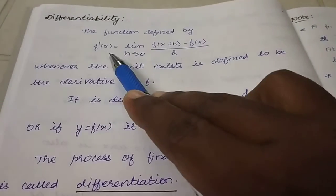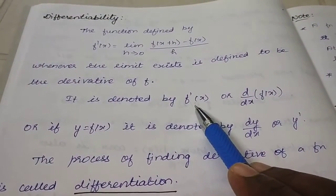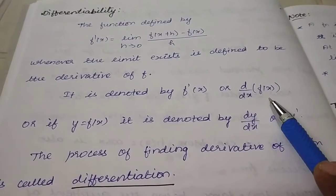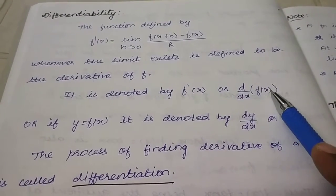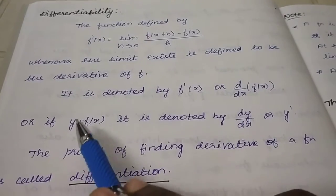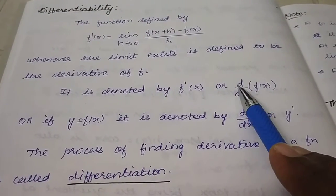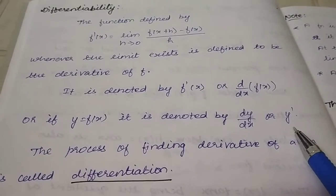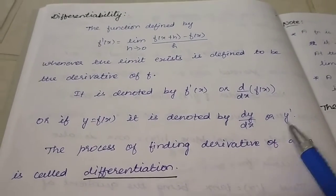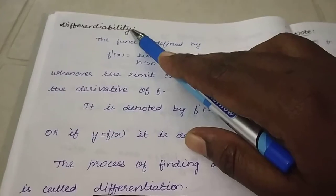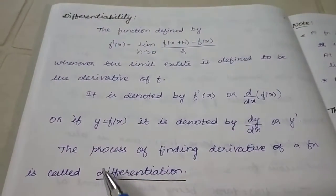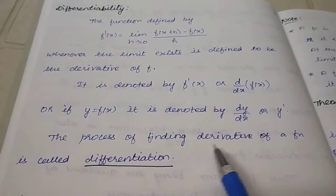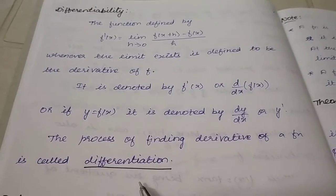Instead of f'(x) we can write d/dx of f(x), or if f(x) is named y, then dy/dx or simply y'. There are many types of notation. This is the definition for differentiability — the process of finding the derivative of a function is called differentiation.